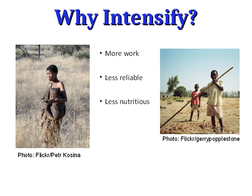So early agriculturalists, such as the Fort Ancient culture in the state of Ohio — the first agricultural people to live there — had up to 90% of their diet composed of corn. Just one thing made up a huge portion of their diet. And that's reflected in the health status of those people.